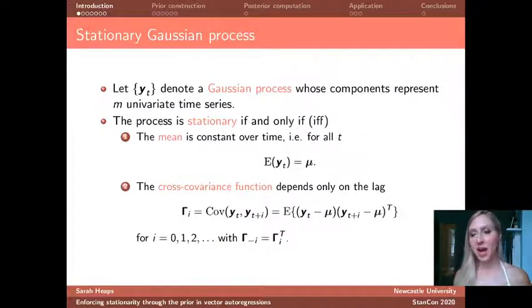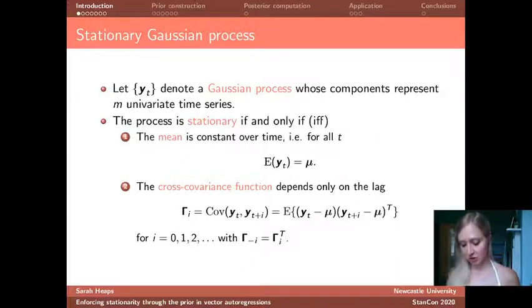So we'll let y1, y2, and y3 and so on denote a Gaussian process with n-variate observation vectors which represent n univariate time series. So this might be for example the sales of n different products over time. We say that this process is stationary if and only if the mean is constant over time as indicated by this equation here, and the cross covariance function depends only on the lag and not on its position in time as indicated by this equation here.